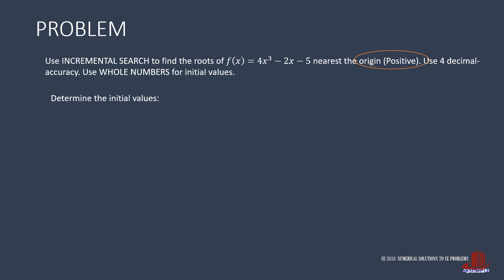Since we are looking for a root nearest the origin, we should focus on values of x near 0, and the value should be positive. We can start by plugging in 0 for x. The function turns out as 4 times 0 cubed minus twice of 0 minus 5, which equals negative 5. Let's try another value — since we need a positive one, let's pick 1 for x. The function becomes 4 times 1 cubed minus twice of 1 minus 5, which gives negative 3.